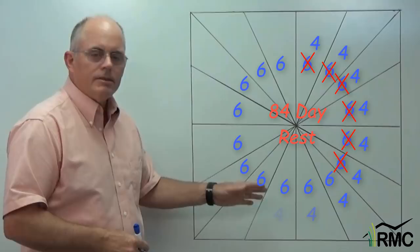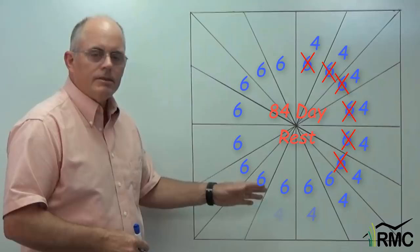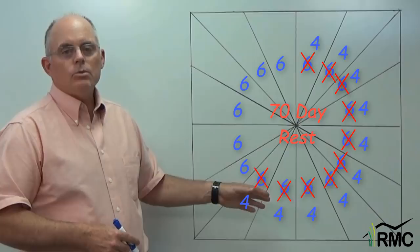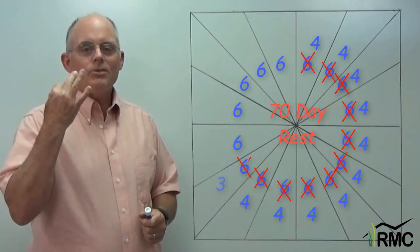Until he gets to about the 10th paddock, and now he's down three weeks of rest. He's moving into a lot less feed now. So guess what? The cows graze each paddock down in just three days. And every time he checks them, they bunch up at the gate pleading, move us.